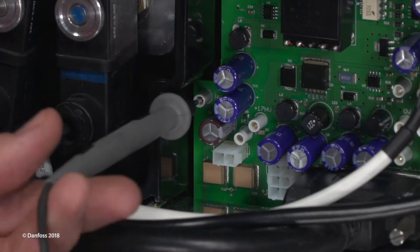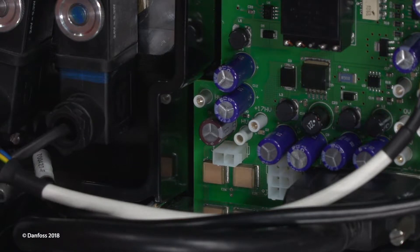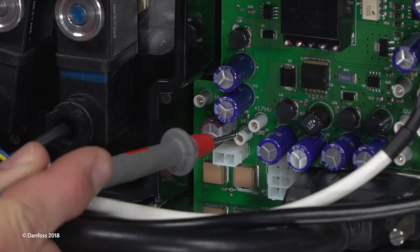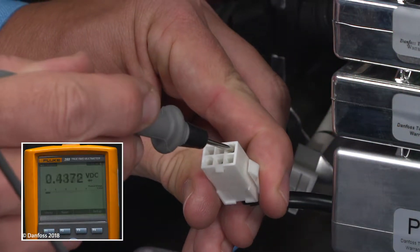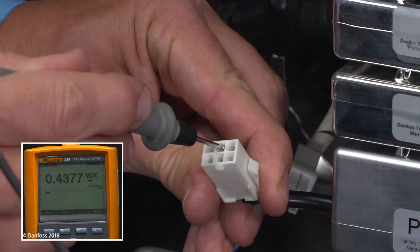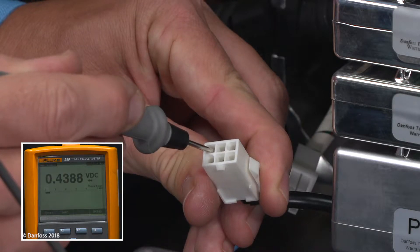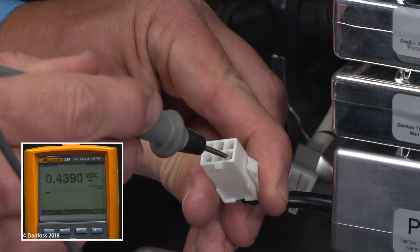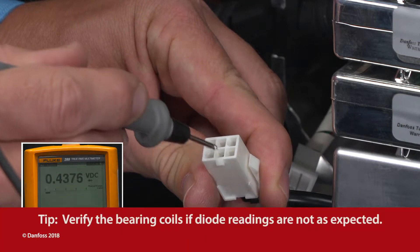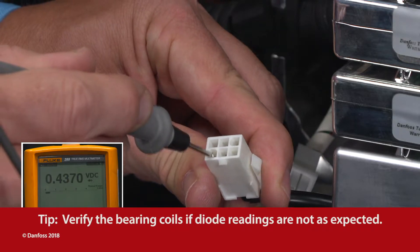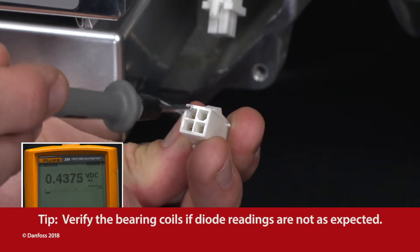Remove the negative test lead from the backplane and insert the positive test lead into the HV negative test point on the backplane. Using the negative test lead, test each point of the PWM output cables, ensuring that the test lead contacts the pin in the connectors. The voltage drop across the diode should be 0.39 to 0.46 volts DC.